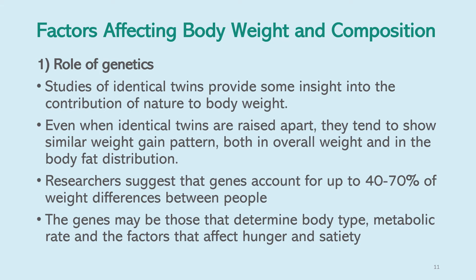There are four factors affecting body weight and composition. The first factor is genetics. Studies of identical twins provide insight into the contribution of nature to body weight. Even when raised apart, identical twins tend to show similar weight gain patterns, both in overall weight and fat distribution. Researchers suggest genes account for up to 40 to 70 percent of weight differences between people, including genes that determine body type, metabolic rate, and hunger and satiety.